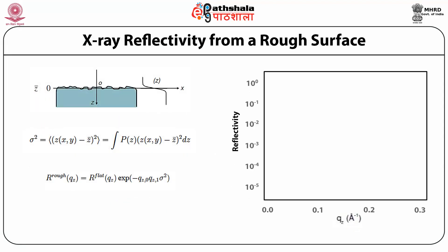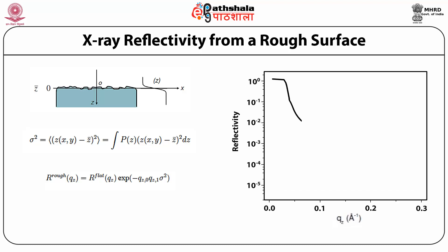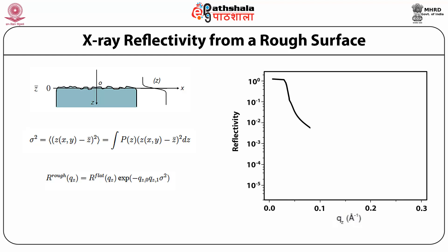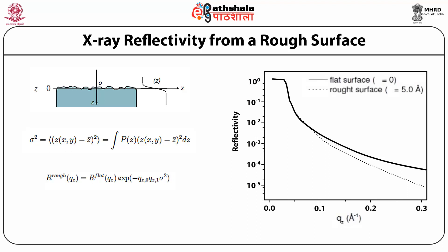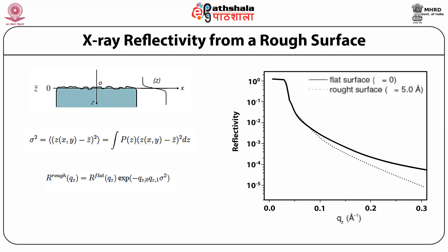For reflectivity from a rough surface, a surface is always somewhat rough, represented by a deviation sigma from the average surface. Sigma represents the average roughness of the surface. Even a pure water or atomically flat surface has a minimum roughness on the angstrom or atomic scale. We calculate reflectivity for rough surfaces as the reflectivity from a flat surface multiplied by an exponential factor of the roughness.